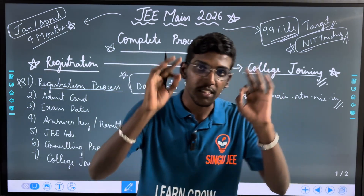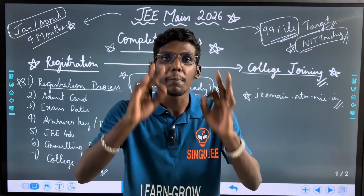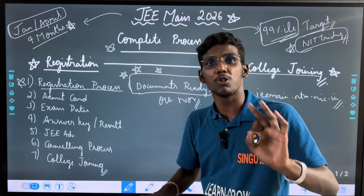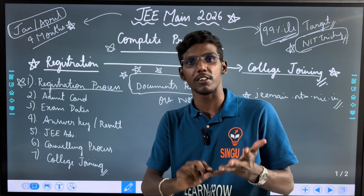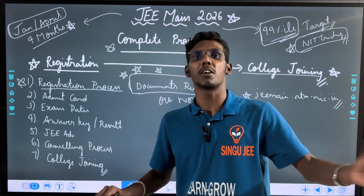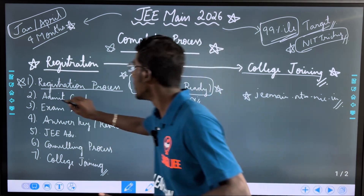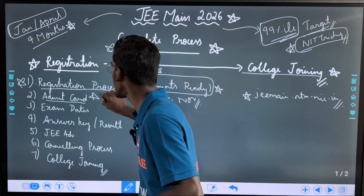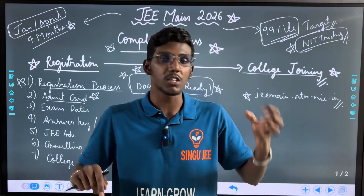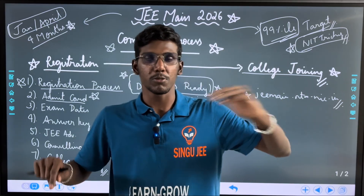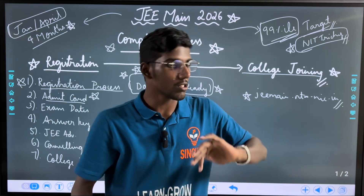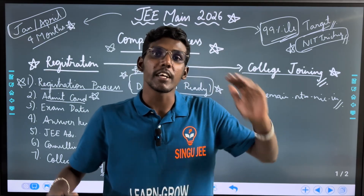JEE main.nta.nic.in is the official website. So this is the registration — the main thing is that you can upload the documents. You can upload OBC-NC certificate, General EWS certificate, and the validity certificate. If you are ready, then you can upload it. Next year you can upload it. If you have the admit card, you can upload it — 3 days before the exam. Suppose you apply for NTA January — October application is for January. If you have the NTA module, then you can upload an update.